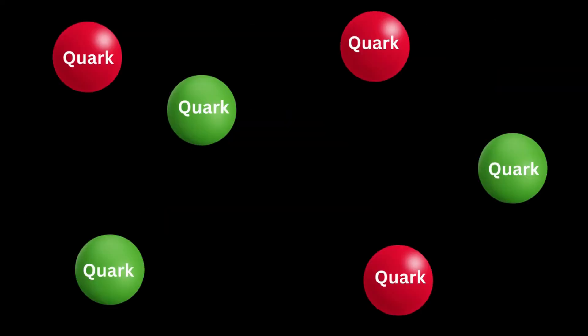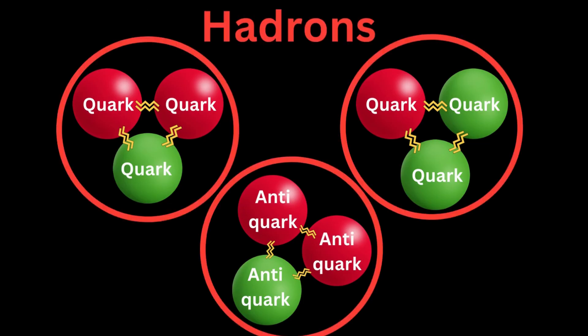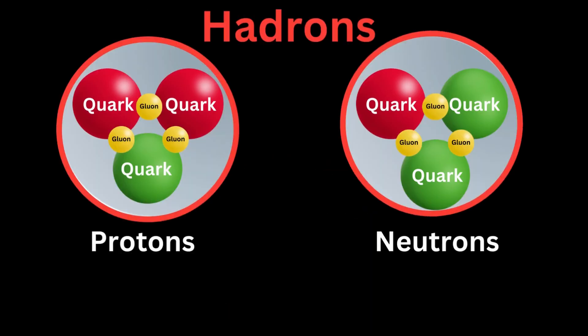Due to a characteristic known as confinement, quarks are never found alone. Instead, they are always bound with other quarks or antiquarks to create composite particles known as hadrons. Protons and neutrons, which are composed of mixtures of up and down quarks, are the most prevalent hadrons.